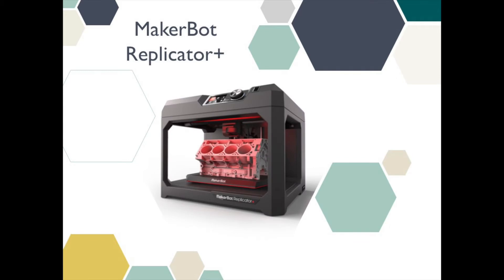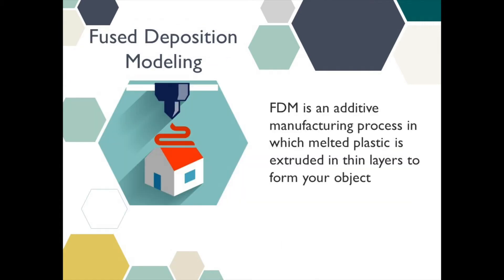So what exactly is 3D printing? Here at the Milton Public Library we have a MakerBot Replicator Plus, which uses a printing method called Fused Deposition Modeling, sometimes known as FDM. This is an additive manufacturing process in which melted plastic is extruded in thin layers, one on top of the other, to form your object.